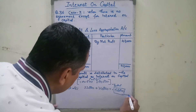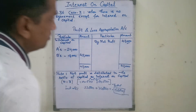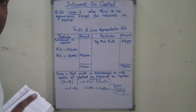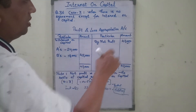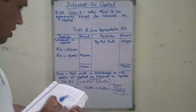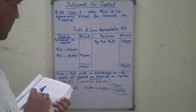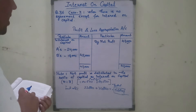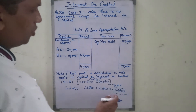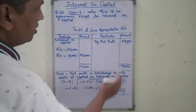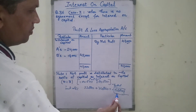This total interest of 56,000 is more than the profit. In this question, the profit is only 42,000, while the interest at 8% works out to 56,000, which is more than 42,000.